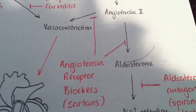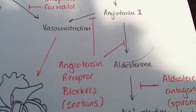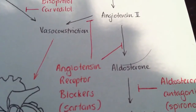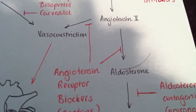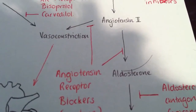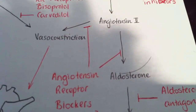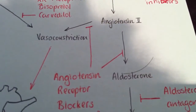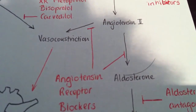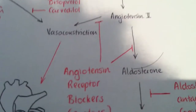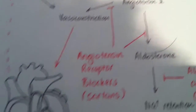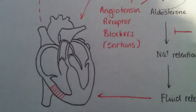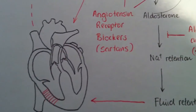ARBs also bind to the receptors on the vessels that angiotensin 2 causes constriction of. So it stops the vasoconstriction, thus less resistance and less stress for the heart.